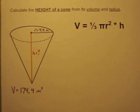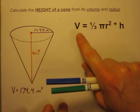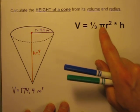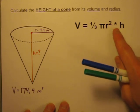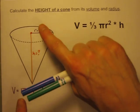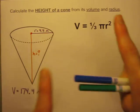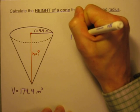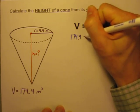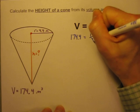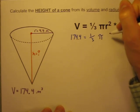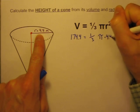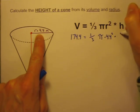In this video I'd like to show you a couple of ways to do that. Both ways start with the formula that the volume of a cone is equal to one third times pi times the radius squared times the height. Let's start by taking the two numbers we're given and putting them into that formula. Volume is 174.4.